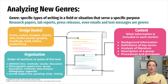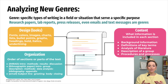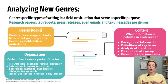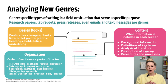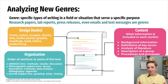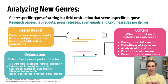Then we have C for Content, or the information that is included in each section. For example, you might include background information or history, definitions of key terms, an analysis of the literature, a description of a group of people, or procedures and processes. For content, just think about what information is in each section.